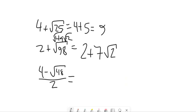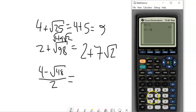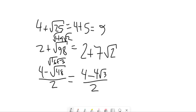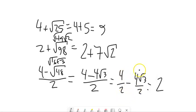Now division: (4 minus the square root of 48) divided by 2. Let me think about the square root of 48 — 48 is divisible by 16, and 16 times 3 is 48. So the square root of 48 is 4 root 3. Now the expression is (4 minus 4 root 3) divided by 2. Both terms are being divided by 2: 4 divided by 2 is 2, and 4 root 3 divided by 2 is 2 root 3. So the answer is 2 minus 2 root 3.